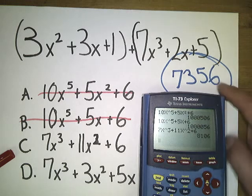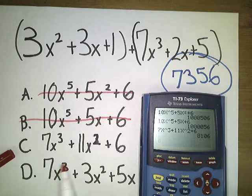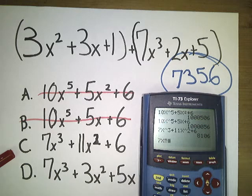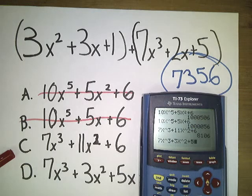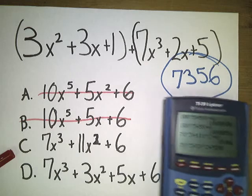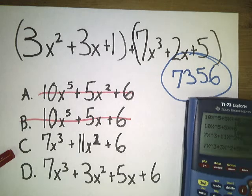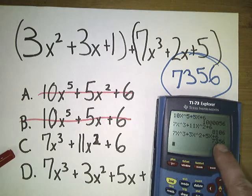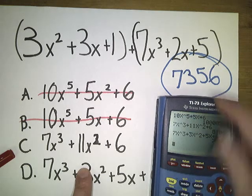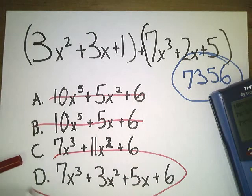So let's look at 7X to the 3rd plus 11X to the 2nd plus 6. 8106. That's pretty close, but not exactly the right number. So let's try this one and see if it actually gives us the right answer. X to the 3rd power plus 3X squared, let's raise it to the 2nd power, plus 5X plus 6. 7356. This is 7356. So this one, and so is this. So this is the correct answer.